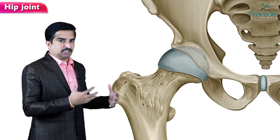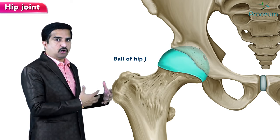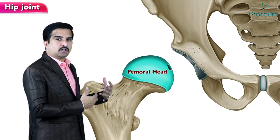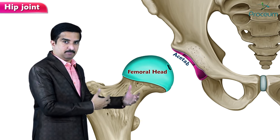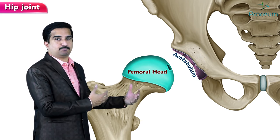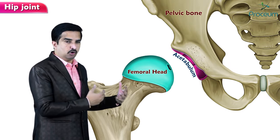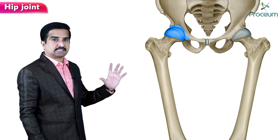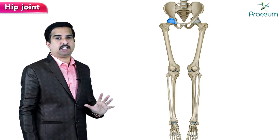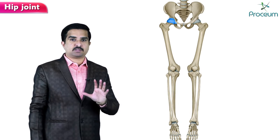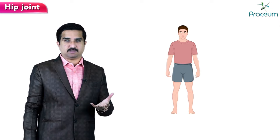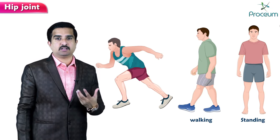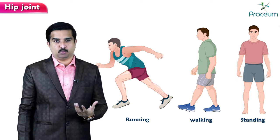The ball of the hip joint is comprised of the head of the femur, which articulates with the acetabulum — a cup-like depression within the pelvic bone. The hip joint connects the axial skeleton to the lower extremities and functions to support the static, that is standing, and the dynamic, that is walking, running, and weight-bearing.